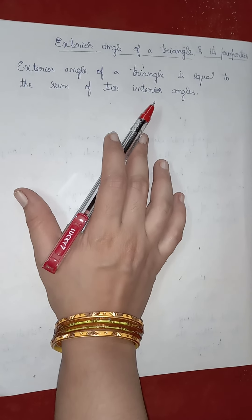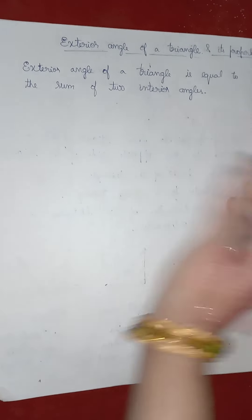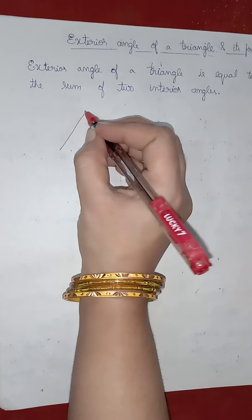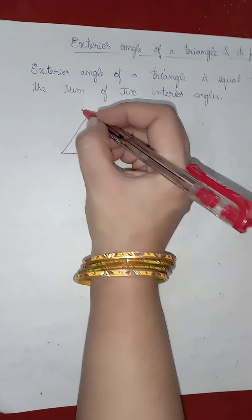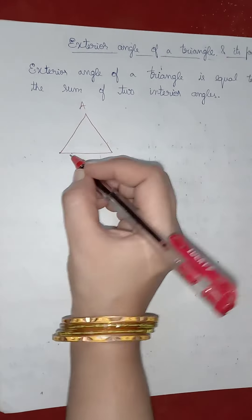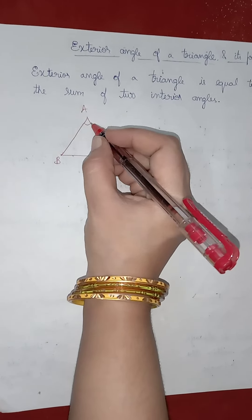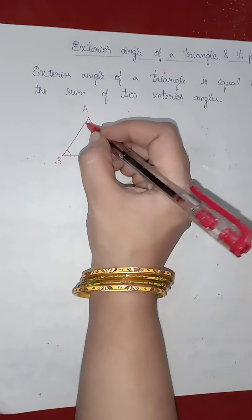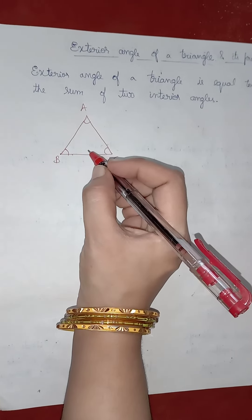Let me explain what we mean by the exterior angle of a triangle. If you draw a triangle A, B, C, the angles present at the vertices A, B, C inside the triangle are called interior angles.